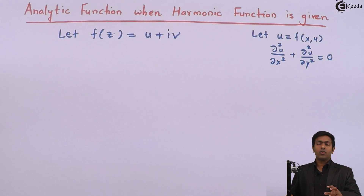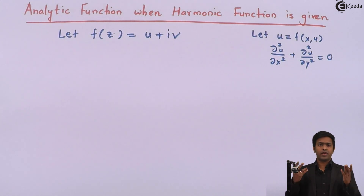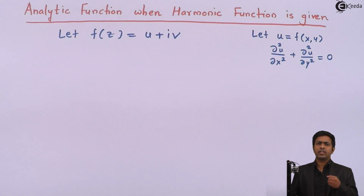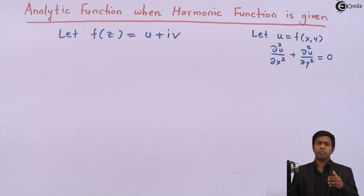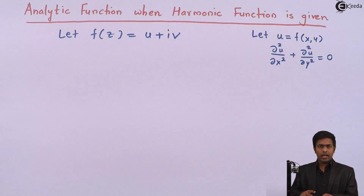Now you understand the relationship between analytic and harmonic functions — they are related to each other. In mathematics, there are cases where you are given a harmonic function, either u or v, and asked to find the analytic function from it. Since u and v are conjugate harmonic functions, if we have one given, we can find its first-order partial derivatives: ∂u/∂x and ∂u/∂y, or ∂v/∂x and ∂v/∂y.